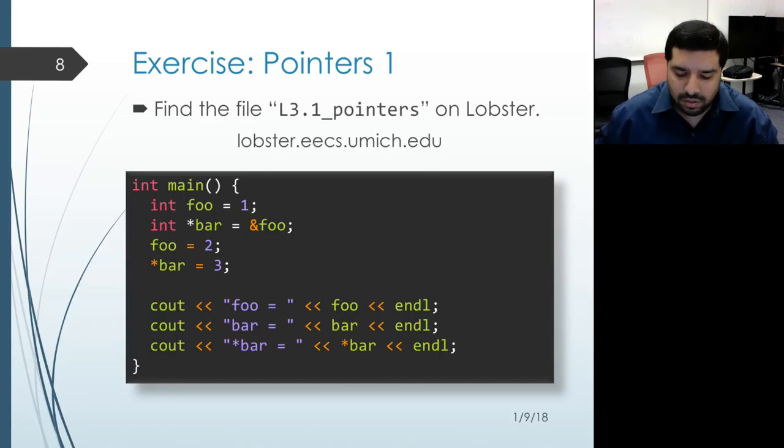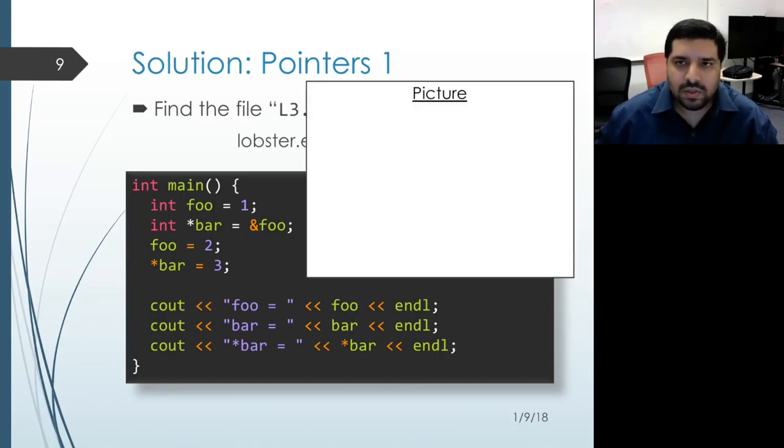Often, for an exercise like this, it's useful to draw out a memory diagram to visualize what's happening in the program. When the program starts up, the main function gets called, which means that we get a new activation record for main.